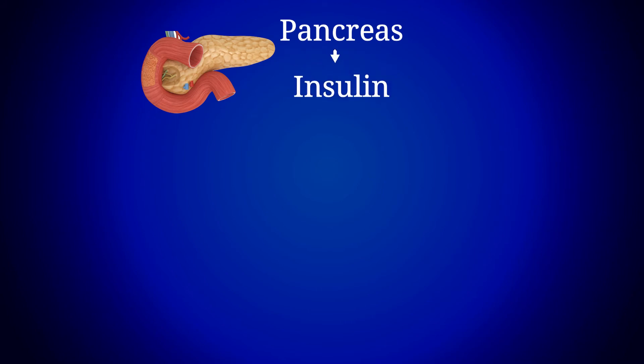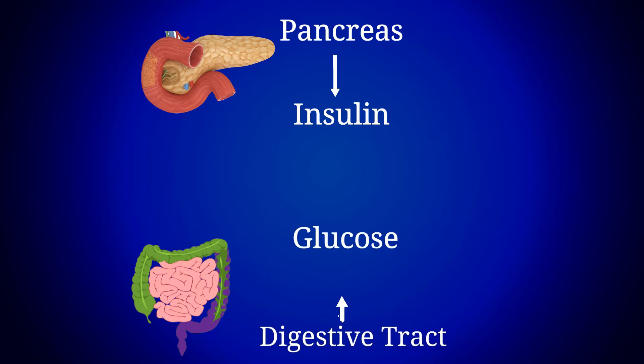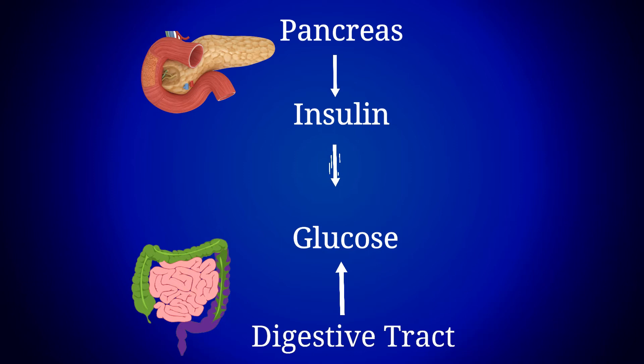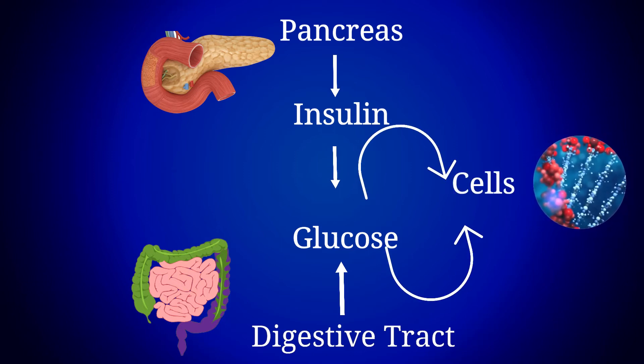Diabetes is a disease where your body cannot produce enough insulin, or your body cannot utilize the insulin it produces. The insulin is produced by a gland called the pancreas, which is located in your abdomen. The role of insulin is to allow uptake of glucose into your cells, where it is used for energy. Glucose is a breakdown product of carbohydrate metabolism. If the cells cannot uptake the glucose that is broken down, it remains circulating in the blood and causes the condition we know as diabetes.